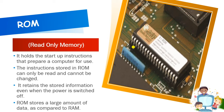Whatever is written in ROM cannot be changed. When you buy any computer, ROM is automatically defined — what functions ROM will perform is defined when you buy the computer. ROM retains stored information even when the power is switched off. That is a benefit of ROM: when you shut down your computer, it will not lose its information. Whatever information is stored in ROM will be there forever. ROM stores a large amount of data compared to RAM — it stores more data than RAM. So ROM is good in two ways: it does not lose information when you shut down, and it can store a large amount of data compared to RAM.